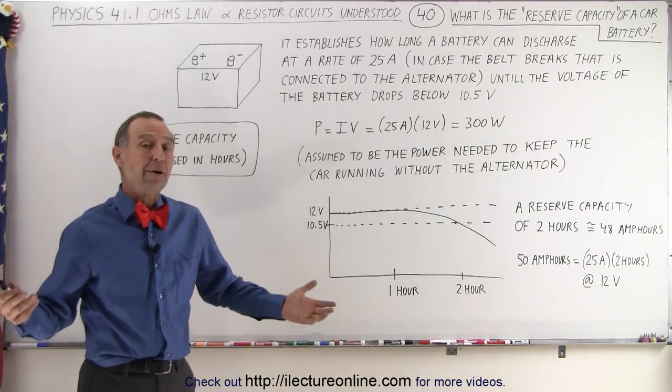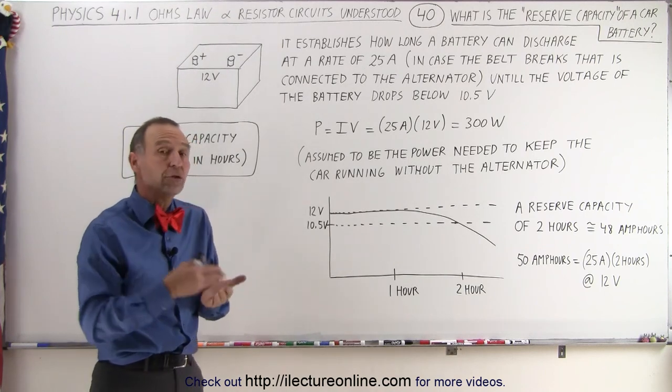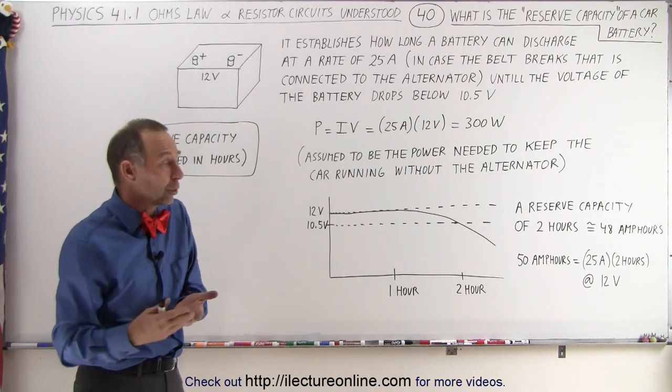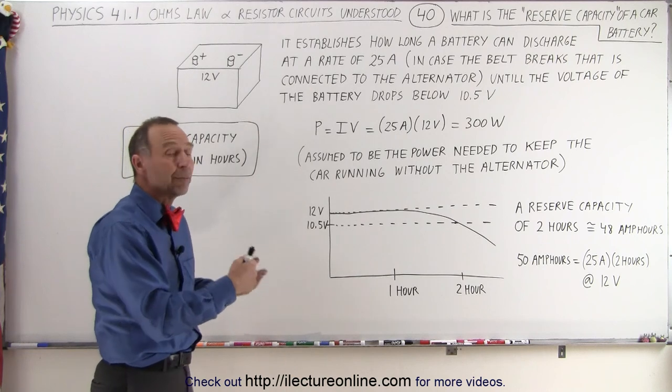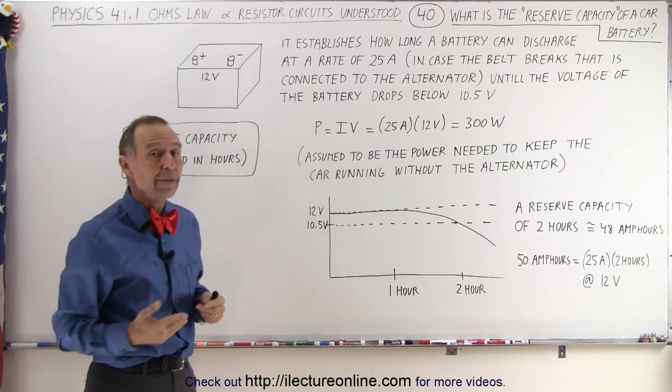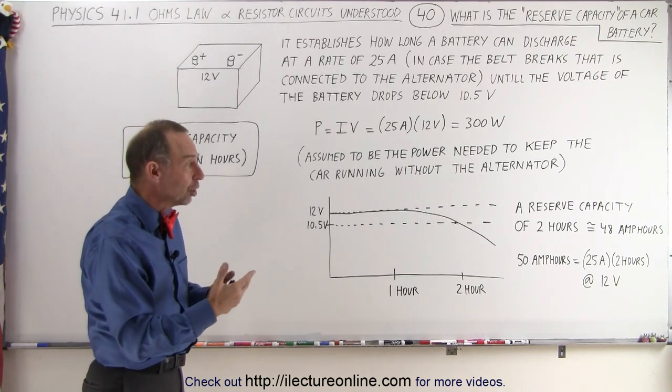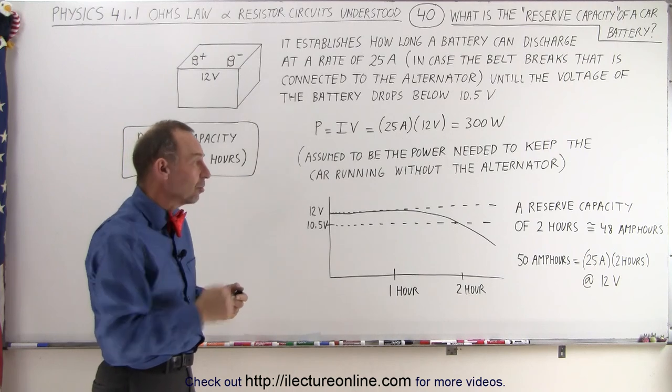So if you have a 50 amp hour battery and it's fully charged and new, you can probably go for another two hours after the alternator no longer works. The battery will provide the power for the car to keep driving, although you'll see your headlights slowly dim and things will stop working as well as they should as the battery continues to discharge.